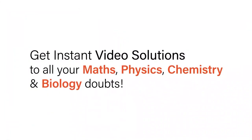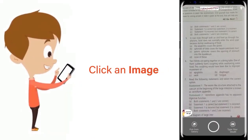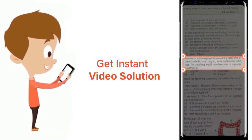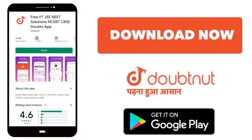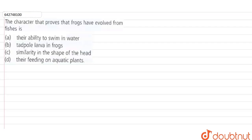With Doubtnet, get instant video solutions to all your maths, physics, chemistry, and biology doubts. Just click the image of the question, crop the question, and get instant video solution. Download Doubtnet app today. In this question we have to select the character that proves that frogs have evolved from fishes.